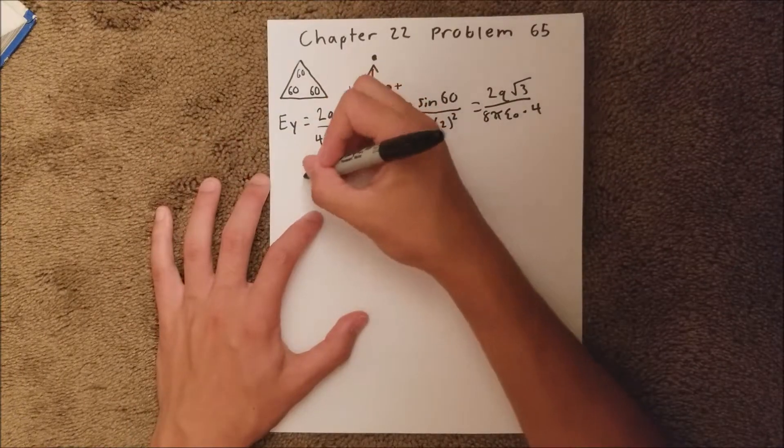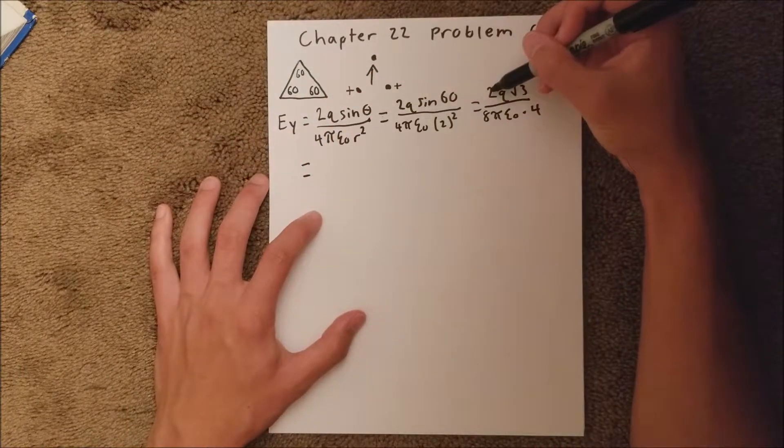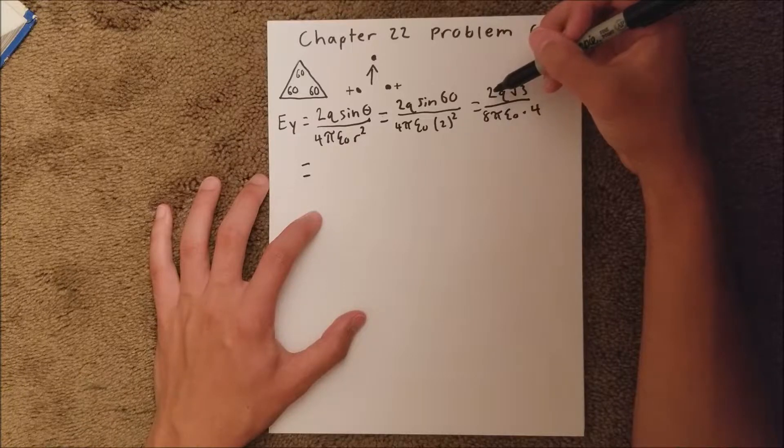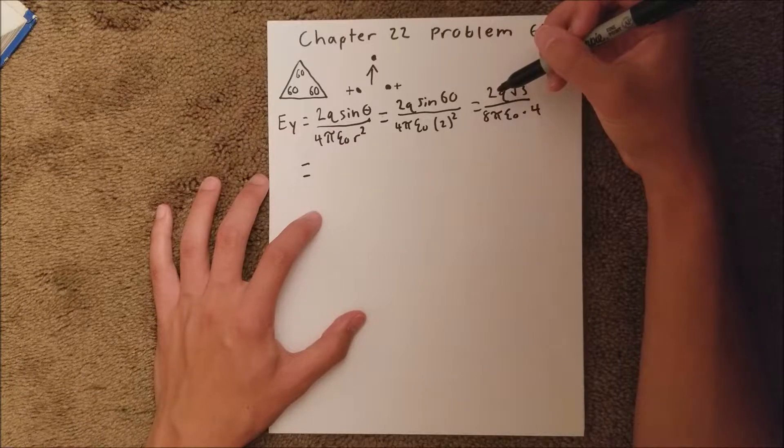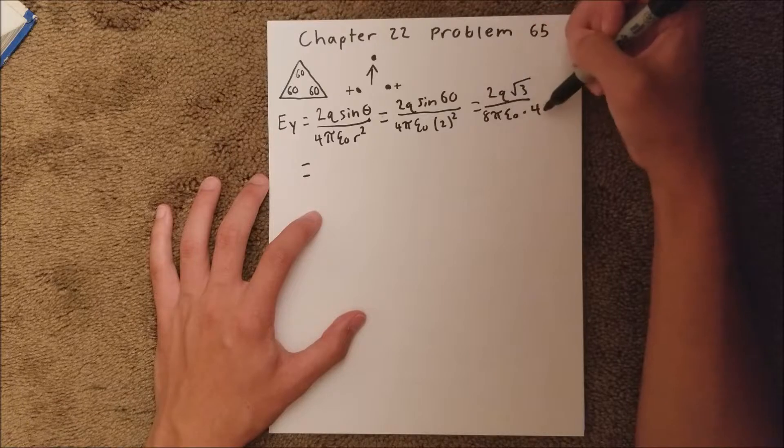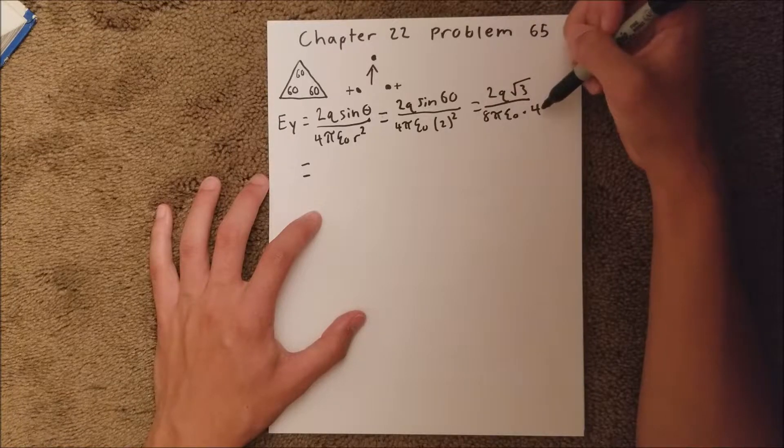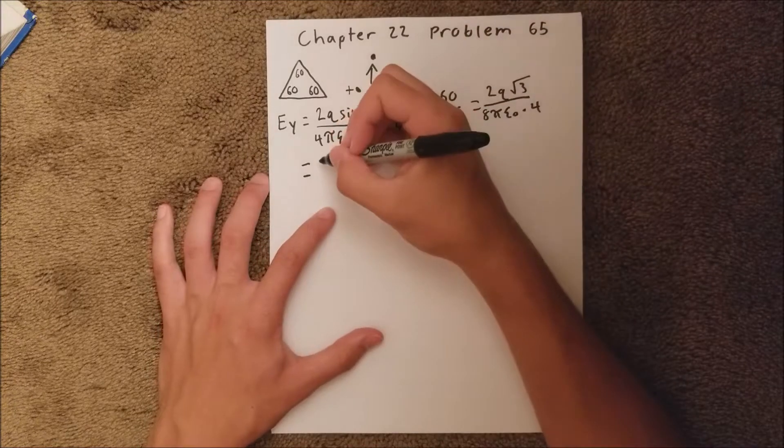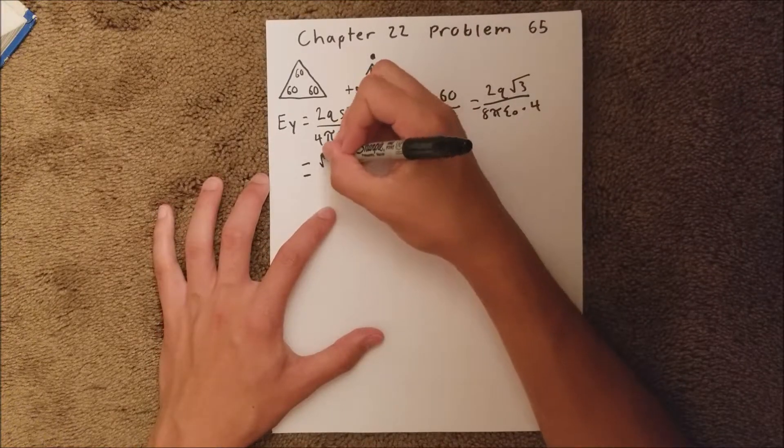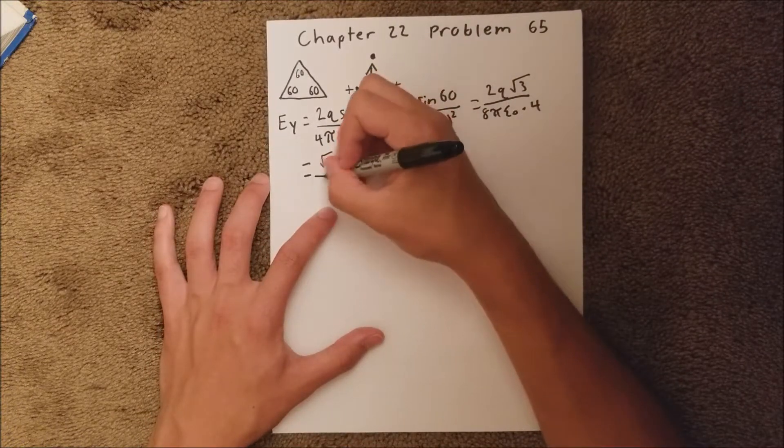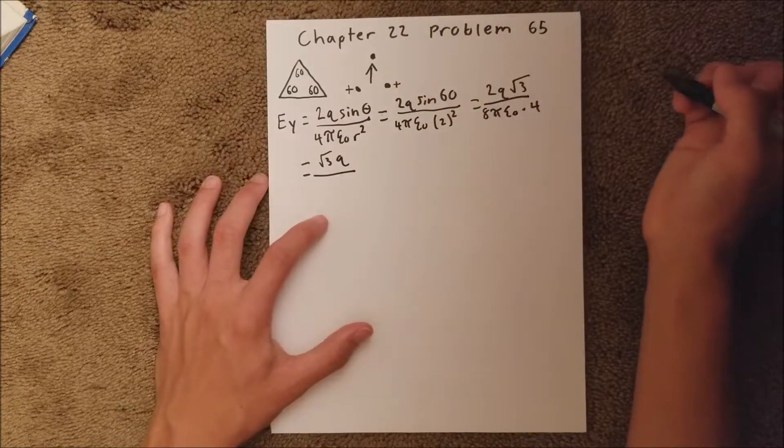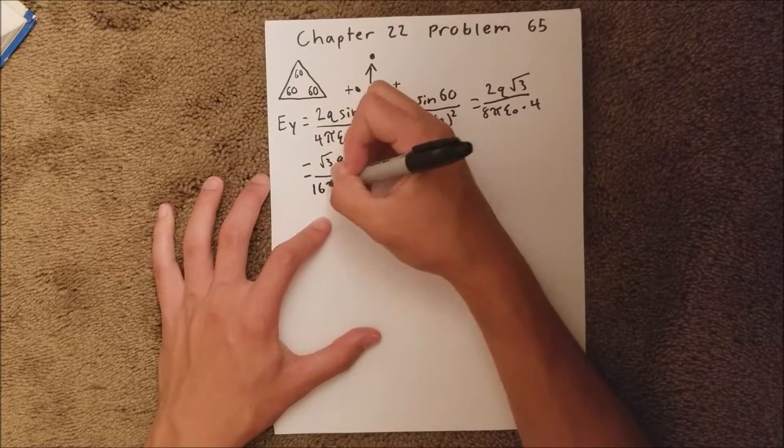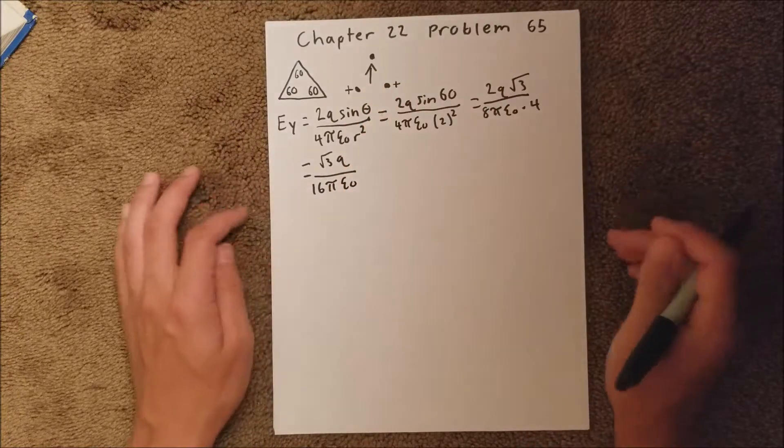And we can write that again. So the 2 here, and the 2 here, and the 4 there can cancel, so you can cancel those out, and that becomes root 3q over 16 pi epsilon sub 0.